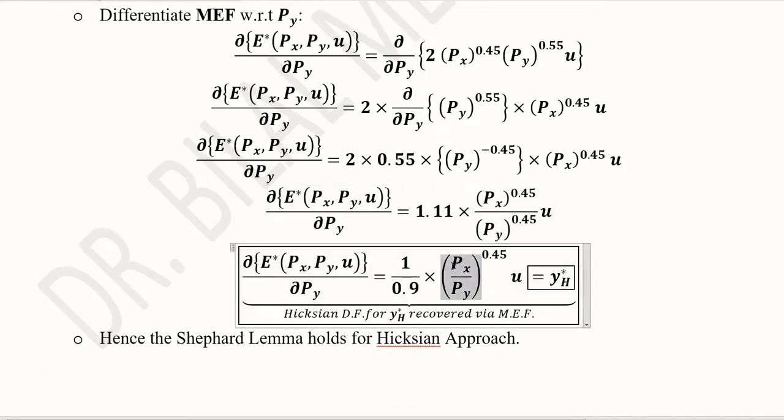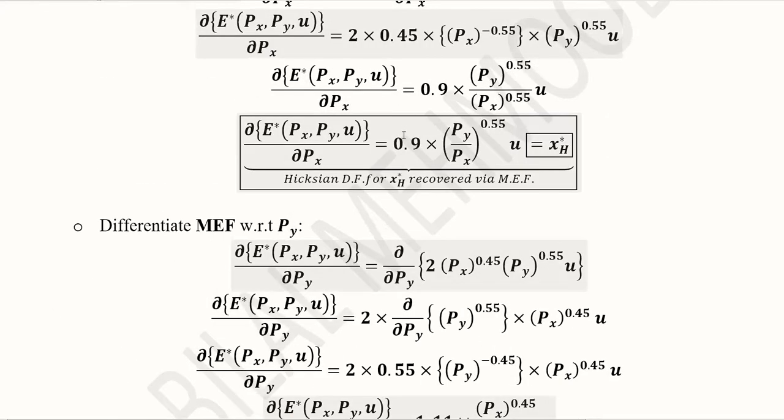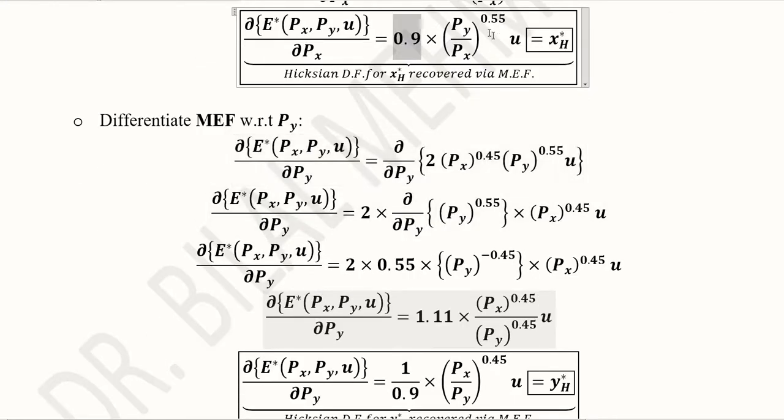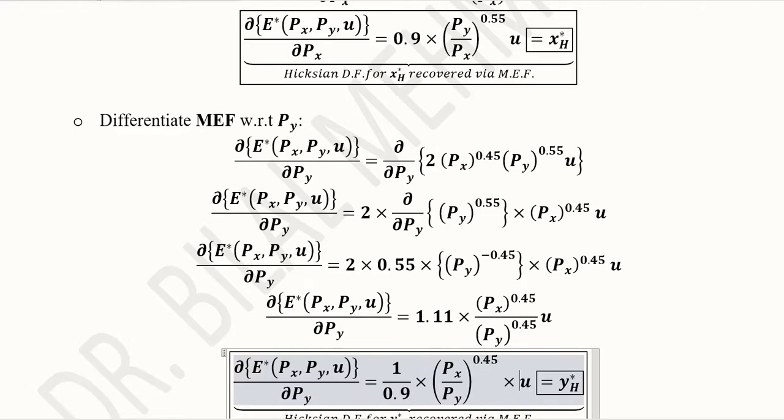Now, we can write them together and this 1.11 can be written as 1 over 0.9 because it was 0.9. So, there is a kind of reciprocalization between this term and that one. As we can also see it was py over px and this is px over py. So, this reciprocal flavor is suitable here whereas u gets multiplied and remains as it is. We can write this multiplication sign here to keep it more readable.